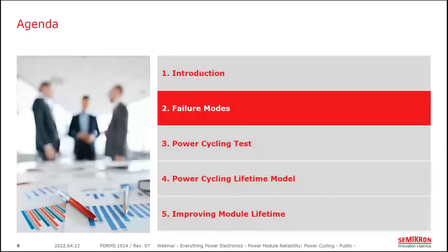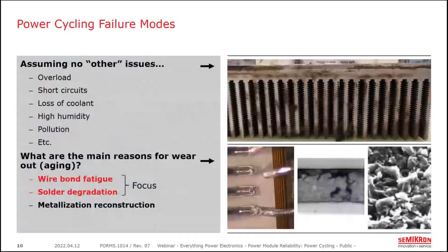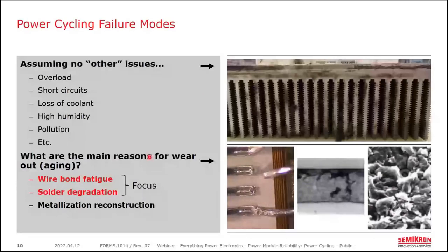Before discussing power cycling capability testing, we need to understand the actual wearout failure modes. Many things must go right before power cycling becomes a concern — short circuits, loss of coolant, high ambient temperature, high humidity, lightning strikes, and pollution all need to be considered first. But if you avoid these and reach the end of life, the primary failure modes are: wire bond fatigue, solder degradation, and to a lesser extent, metallization reconstruction.